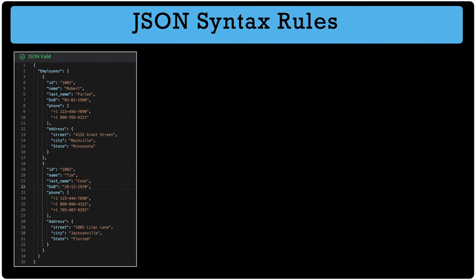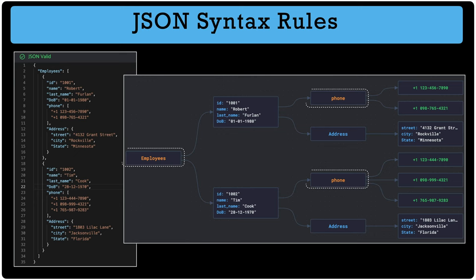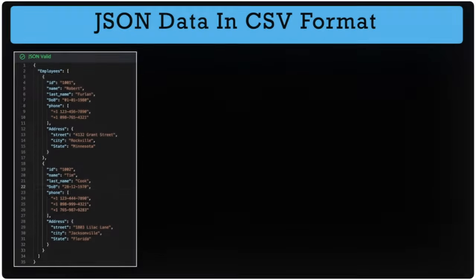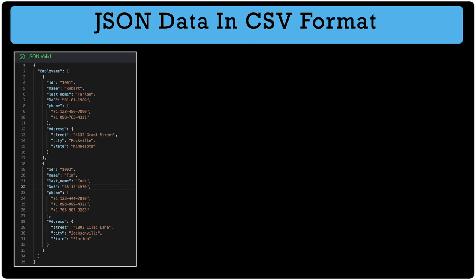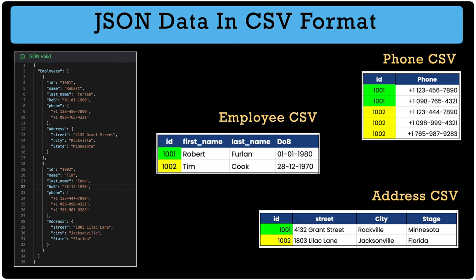If we extend the same JSON file to include more than one employee under the root element, employees becomes a collection appearing in orange, while objects like address appear in blue. If we visualize the same employee JSON data in CSV format, we may need three CSV files: an employee CSV, a phone CSV, and an address CSV. Once the data is loaded, we need to build relationships to maintain consistency across all CSV datasets.